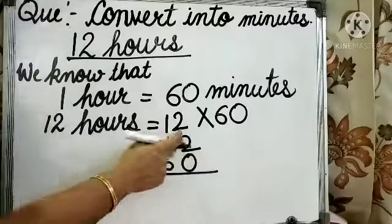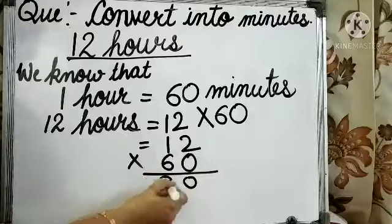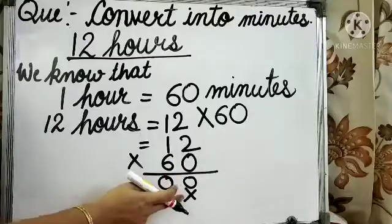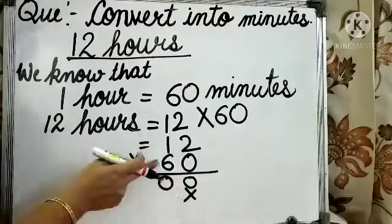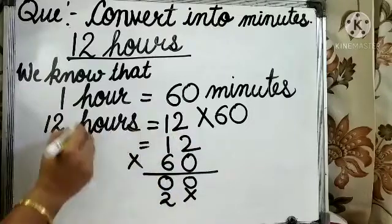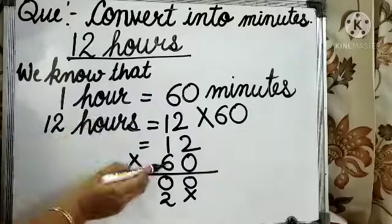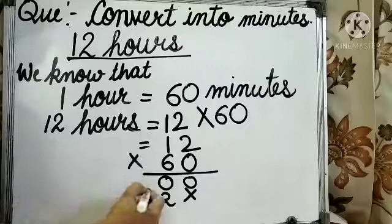0 times 2 is 0, 0 times 1 is again 0. We need to put cross now. 6 times 2 is 12. So, 2 will write here and 1 will be carry. 6 times 1 is 6 plus 1 carry is equal to 7.